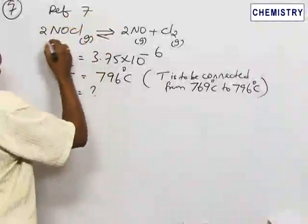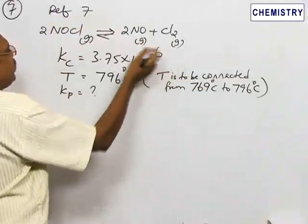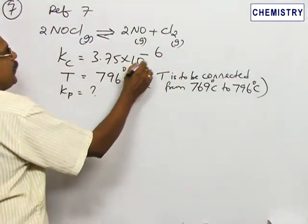Refer to problem number 7: 2NOCl (g) ⇌ 2NO (g) + Cl₂ (g). All are in gaseous phase. Here the KC value is given as 3.75 × 10⁻⁶.